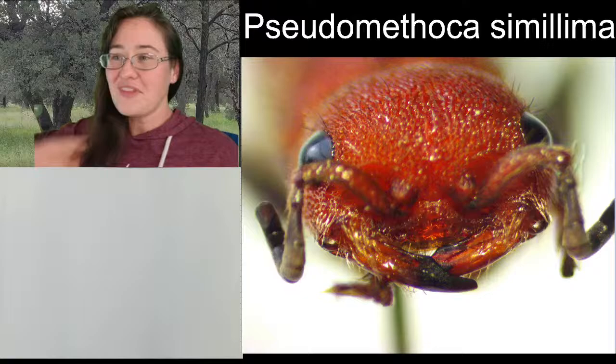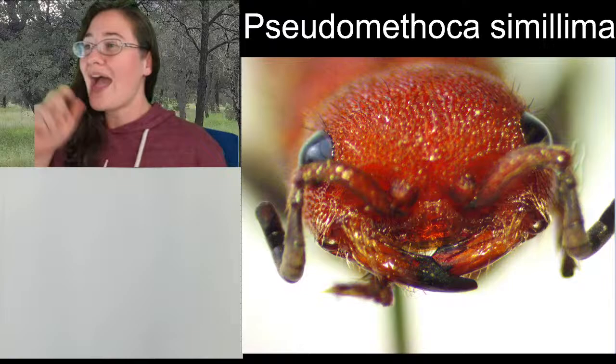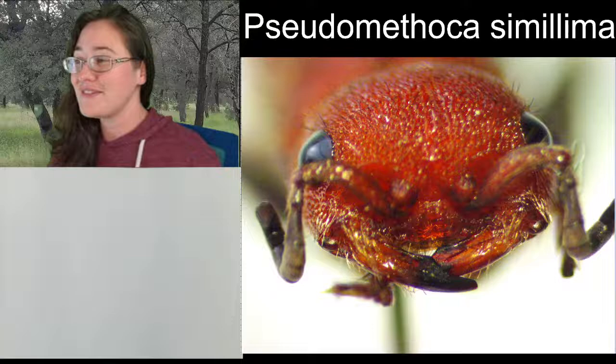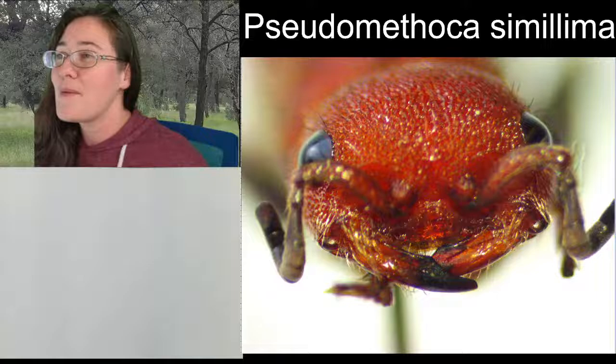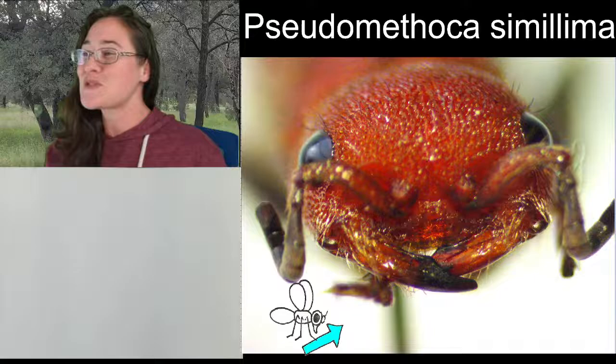We have this beautiful insect over here to my left, and its scientific name is Pseudomethoca simula. This is a species of velvet ant. I think I gave it away in the chat box — I was gonna ask you what types of characteristics you see on this velvet ant.